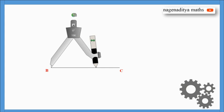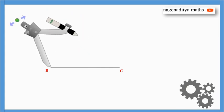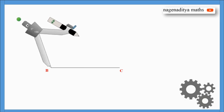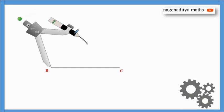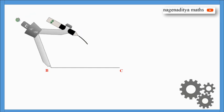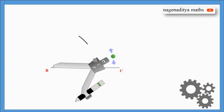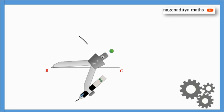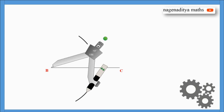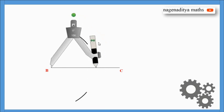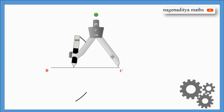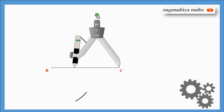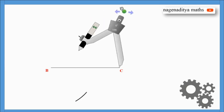Now we have to draw perpendicular bisectors of BC. So for that, first place the compass on point B and draw an arc on both sides of the line segment BC. Next, place the compass on point C and draw the arcs on both sides with the same radius intersecting the previous arcs.